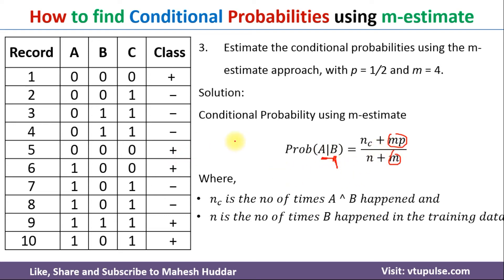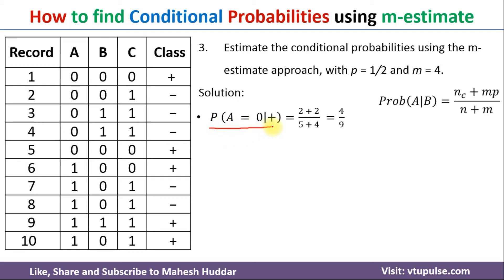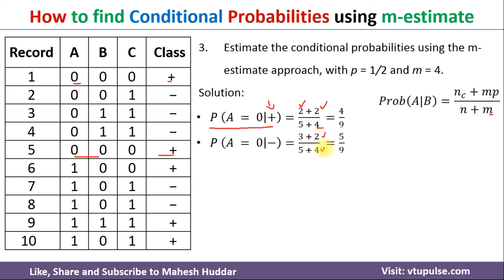Now we use this formula to calculate the conditional probabilities. The first is probability of A equals zero given positive. A equals zero and positive occurs two times. M is 4 and P is 1/2, so M×P equals 2. N (number of positive examples) is 5. So it becomes (2 + 2) / (5 + 4) = 4 by 9. For probability of A equals zero given negative: Nc is the number of times A equals zero and negative both occur — there are three such examples. So it is (3 + 2) / (5 + 4) = 5 by 9. Similarly, we calculate all other conditional probabilities.